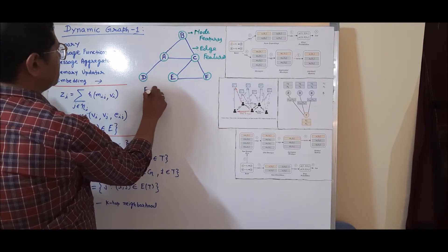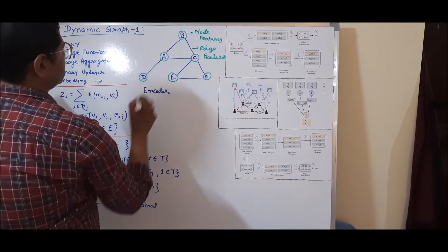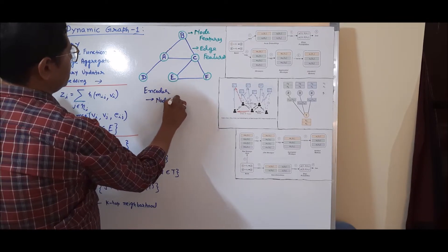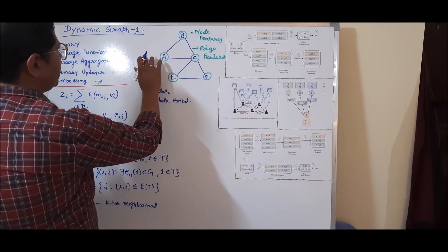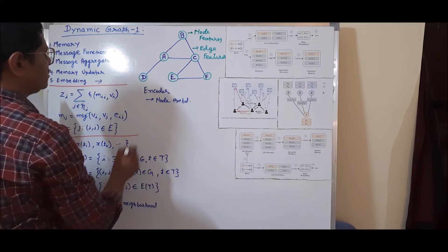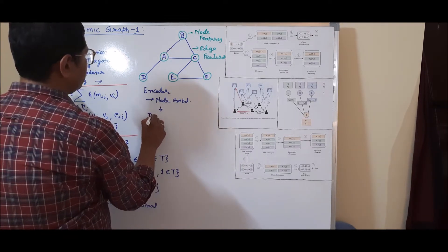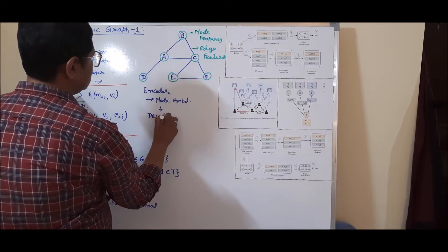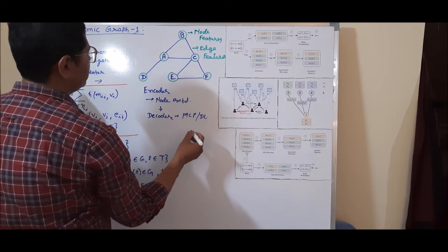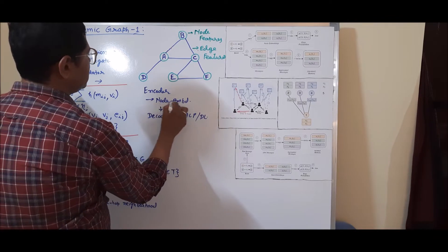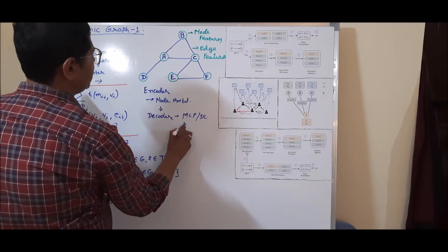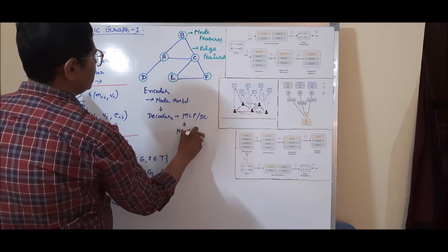The first part is encoder operations. In the encoder operations, we compute node embeddings by taking the nearest neighbor nodes and sub-graph information. Once we get the node embedding, we apply decoder functions or decoder operations. The decoder operations generally use multi-layer perceptrons or some deep learning networks. With the information captured in the node embedding and these deep learning architectures, we apply graph applications like node classification, link prediction, and many other things.